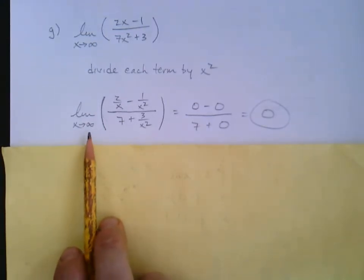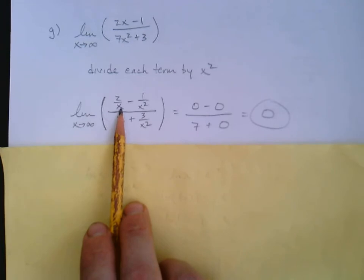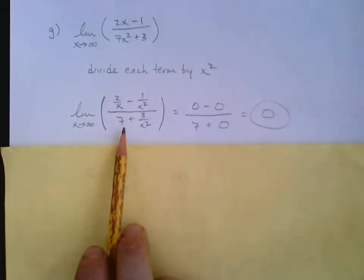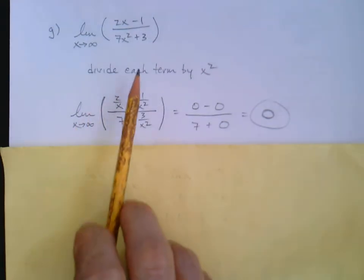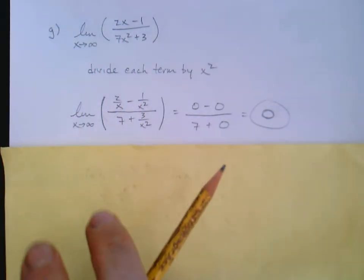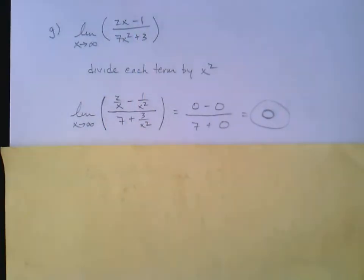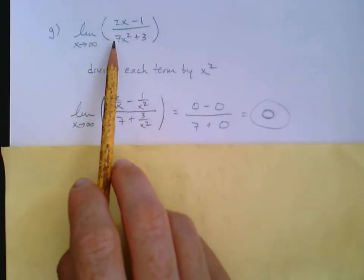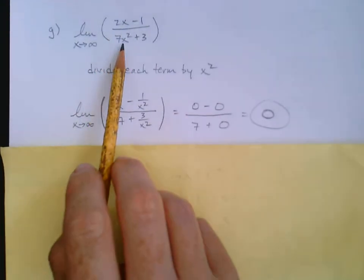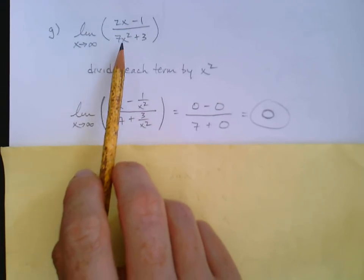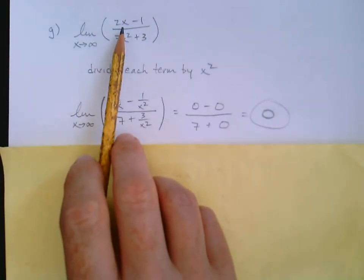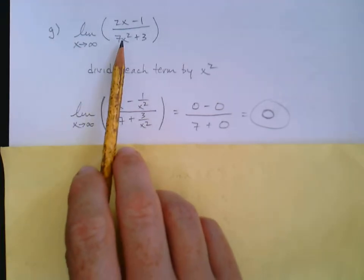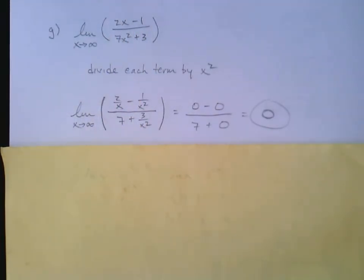Taking the limit as x approaches infinity: 2/x → 0, 1/x² → 0, 7 stays 7, 3/x² → 0. So the answer is 0/7 = 0. The denominator is growing much faster than the numerator — both go to infinity, but the denominator goes there exponentially faster, so the ratio approaches zero.